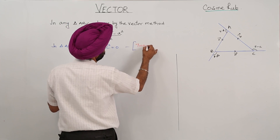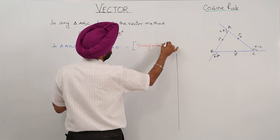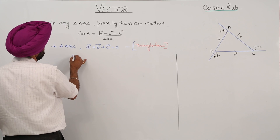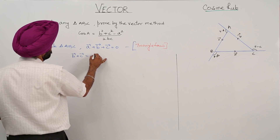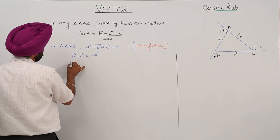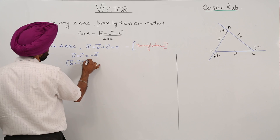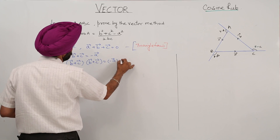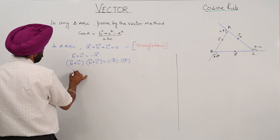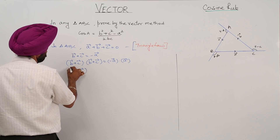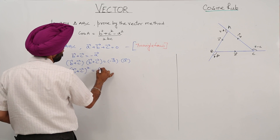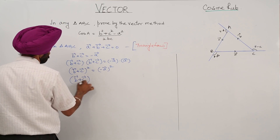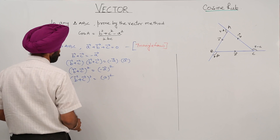Now vector B plus vector C is equal to negative of vector A. Squaring both sides: vector B plus vector C whole square is equal to negative of vector A whole square, which equals vector A whole square.